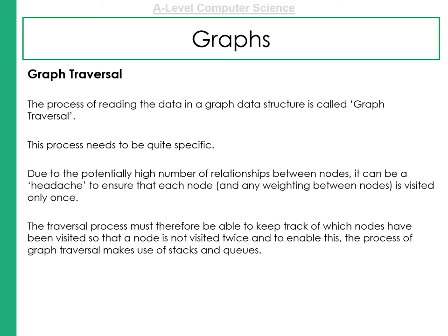Now remember, we could use heuristics for this. Thinking back to our previous units, making sure that we either visit all nodes. But in some graphs, we can visit just the nodes that we want to have a look at. And we have different algorithms to do this, including the A star algorithm. The traversal process must therefore be able to keep track of which nodes have been visited so that the node is not visited twice. And this enables the process of graph traversal to make use of stacks and queues.